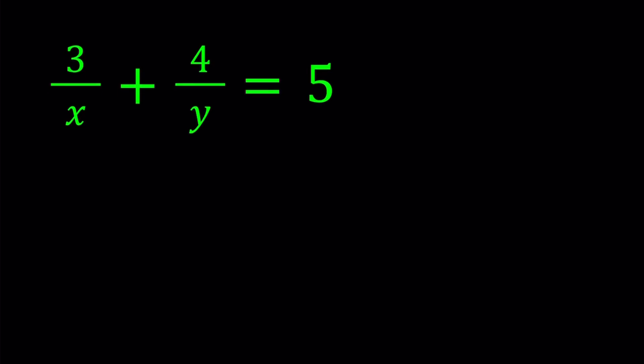First, I would like to make a common denominator. That gives me 3y plus 4x divided by xy, but I'm going to go ahead and cross-multiply that. And to be able to use Simon's favorite factoring trick, I'm going to put everything on the same side.